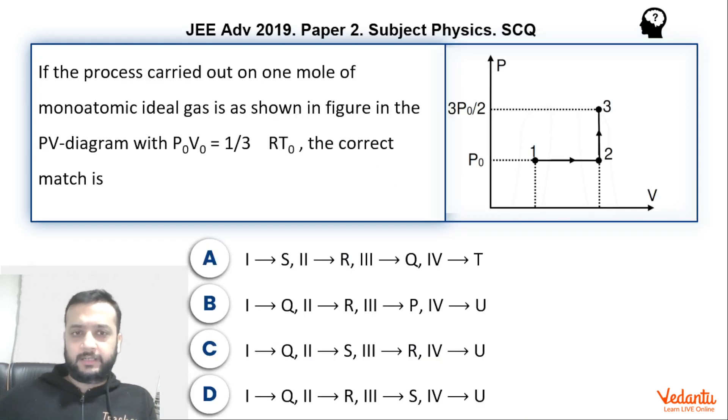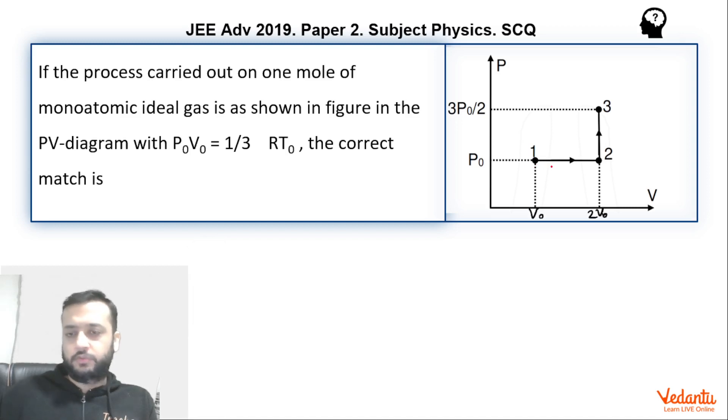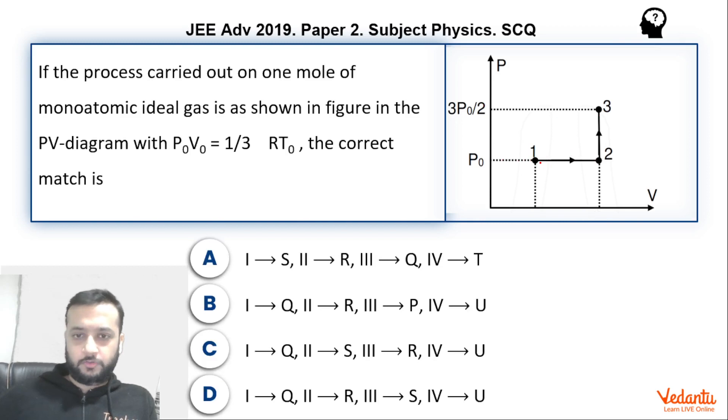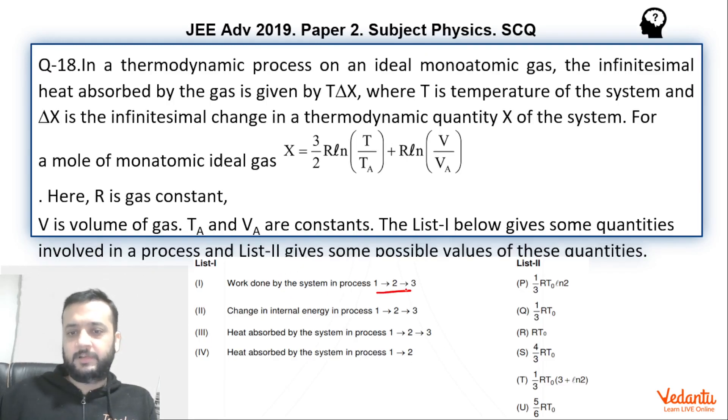So let's go directly to the graph in this question. The graph has been given as a PV graph whose value is P0 over here and 3P0 by 2. So for the first part we have to find the work done by the system in 1, 2, 3.